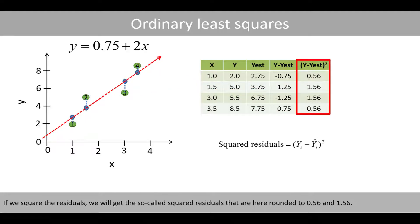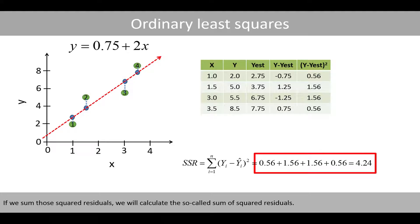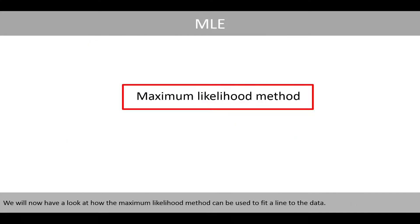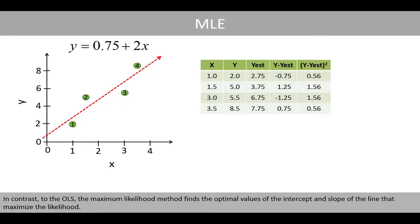If you square the residuals, we will get the so-called squared residuals, rounded to 0.56 and 1.56. If you sum those squared residuals, we will get the so-called sum of squared residuals. The method of ordinary least squares finds the optimal values of the intercept and the slope of the regression line. In contrast to ordinary least squares, the maximum likelihood method finds the optimal values of the intercept and slope of the line that maximizes the likelihood.